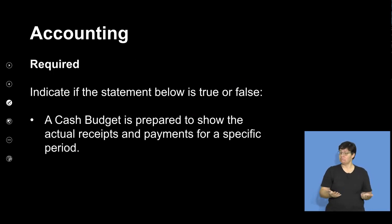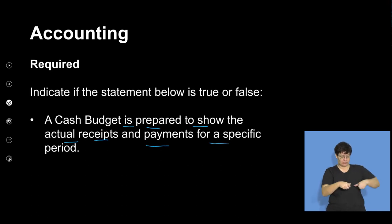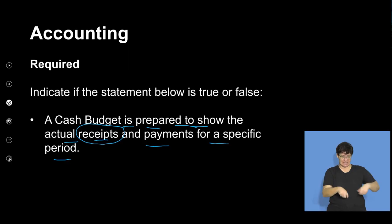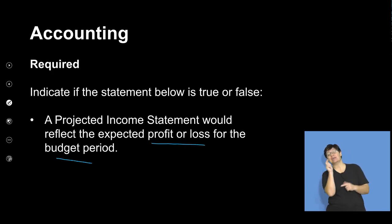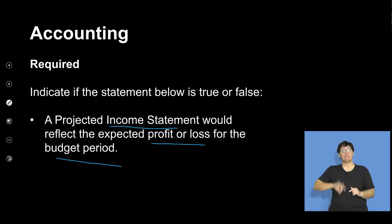We are expected to indicate whether the following statements are true or false. Statement one: a cash budget is prepared to show the actual receipts and payments for a specific period. Since cash budgets deal with receipts and payments, this statement is true.